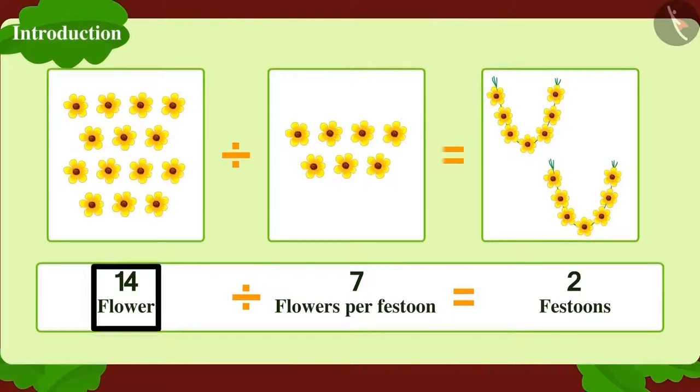If we divide 14 flowers into festoons of 7 flowers each, we will get 2 festoons.